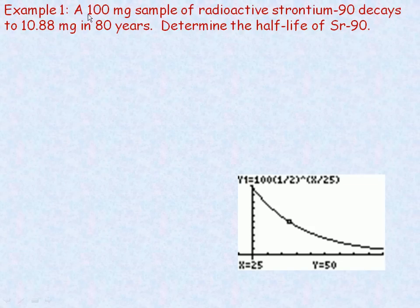So in this example, we're starting with a 100 milligram sample of radioactive strontium-90. The 90 is just the name of the isotope. It has nothing mathematically to do with this question. We're told that it decays to 10.88 milligrams in 80 years. So we're asked to determine the half-life of strontium-90.